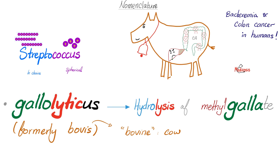Why do we call it Streptococcus? Because it is a spherical bacterium arranged in chains. Why gallolyticus? Because it causes hydrolysis of methyl gallate. Why bovis? From bovine, meaning cows — because it was first discovered to cause diseases in cows, and later they found it also causes diseases in humans.